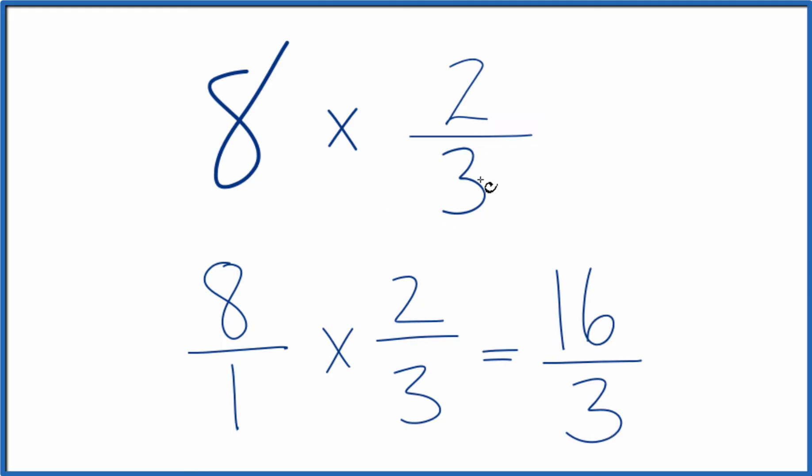So 8 times 2/3, that equals 16/3. 16/3 is an improper fraction. The numerator is bigger than the denominator. So we could change this to a mixed number.